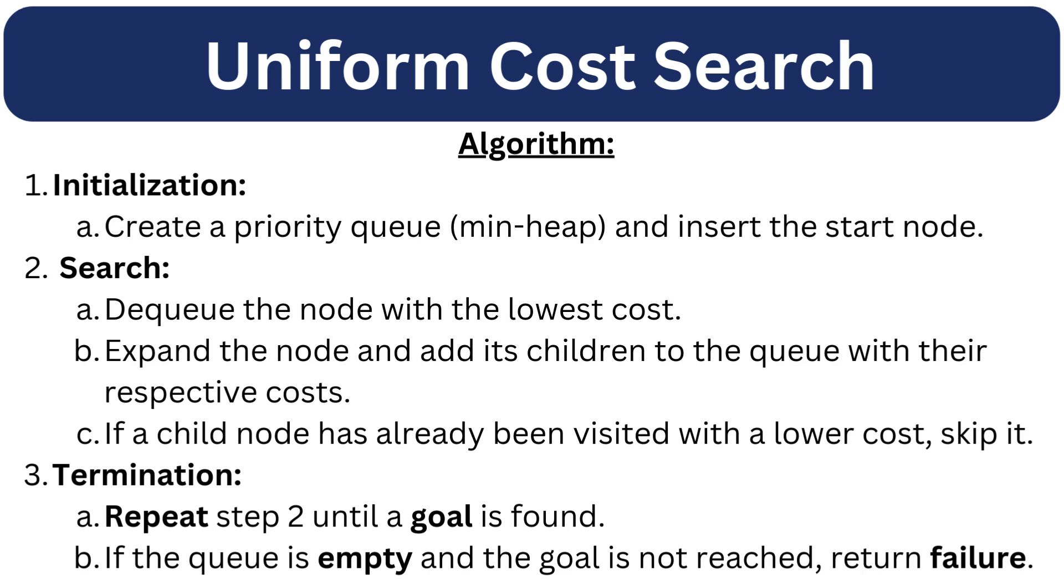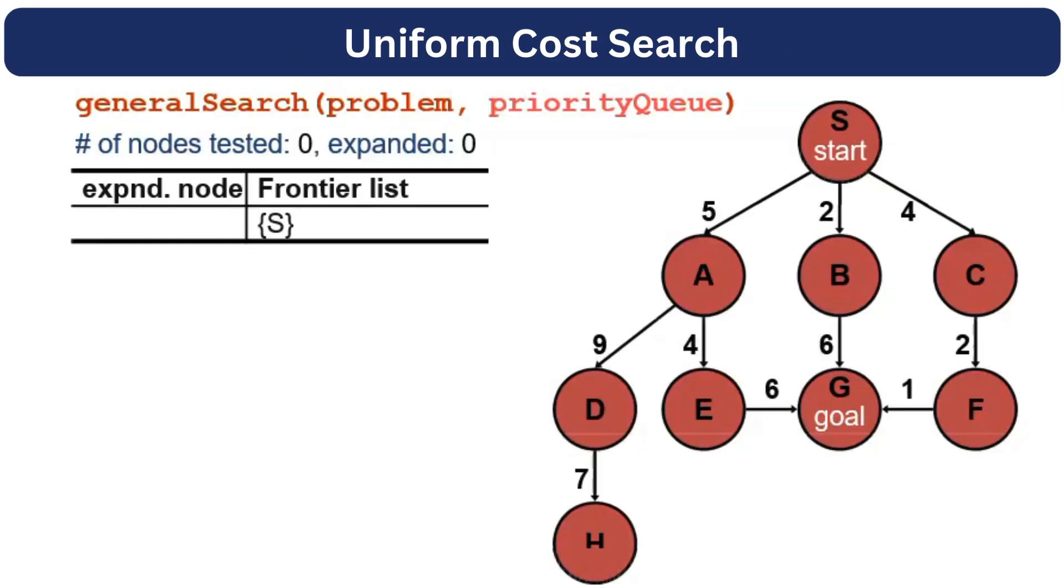Let's understand Uniform Cost Search using an example. We have the same example graph from the previous videos. We will start with the S node and enqueue it to the priority queue. We will dequeue the S node and add its children A, B and C to the priority queue. But this time they will be added in priority of their cost.